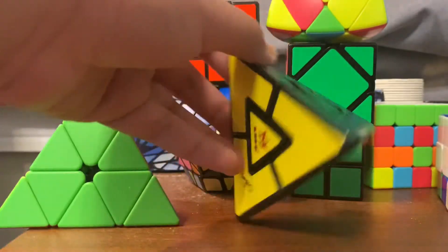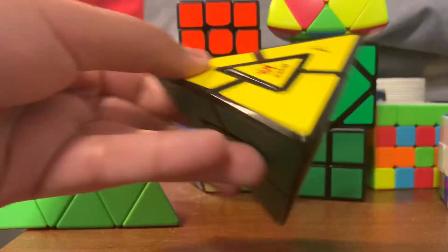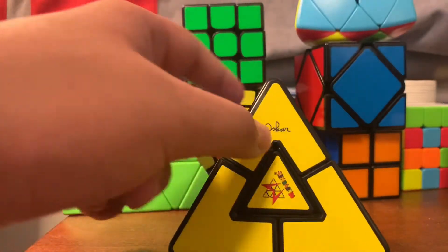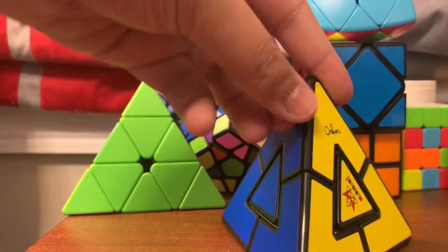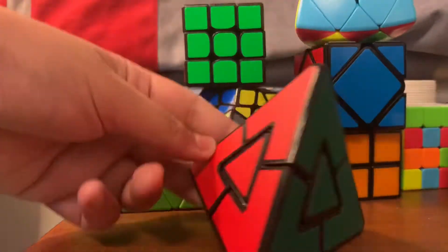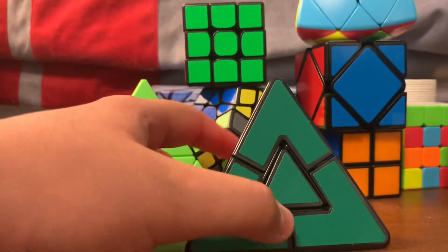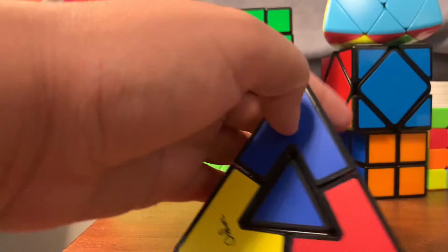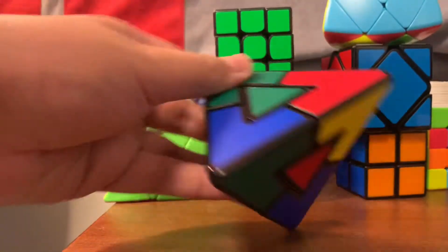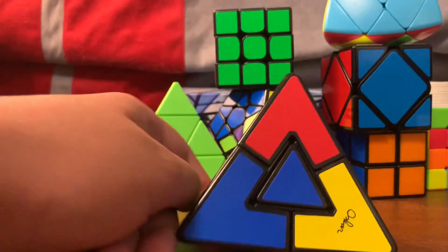Hey guys, today I'll be showing you how to solve a pyramids duo, which is this cube right here. This cube has four colors: yellow, blue, red, and green. It has three corner pieces just like so, and a center piece. This cube cannot be mixed that much because it only has three sides and only four colors. Fully mixed, and now let's get started.